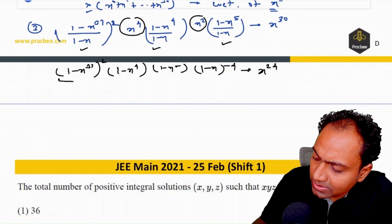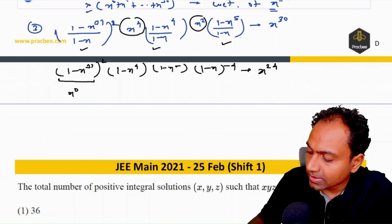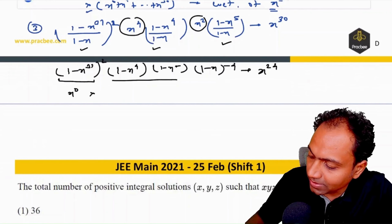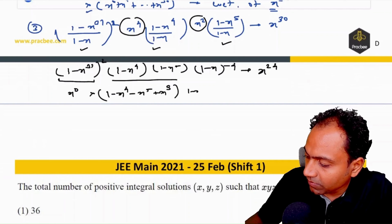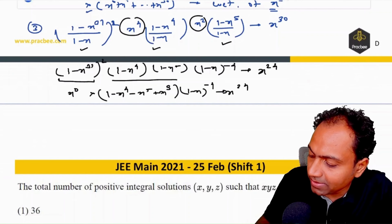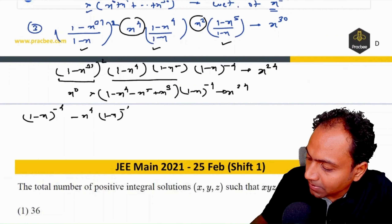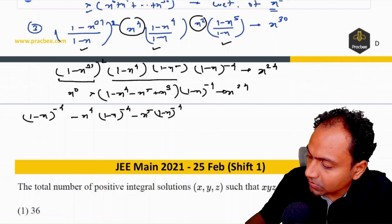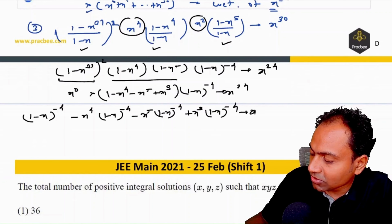Since (1−x³¹)² only contributes x⁰ without exceeding x²⁴ in the first power, we can ignore higher terms. Multiplying the remaining factors: (1−x⁴−x⁵+x⁹) × (1−x)⁻⁴. We need the coefficient of x²⁴ from each term: the first term gives (1−x)⁻⁴, the second −x⁴(1−x)⁻⁴, the third −x⁵(1−x)⁻⁴, and the fourth +x⁹(1−x)⁻⁴.